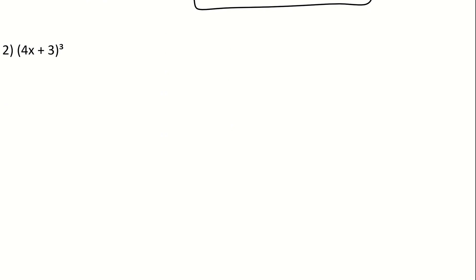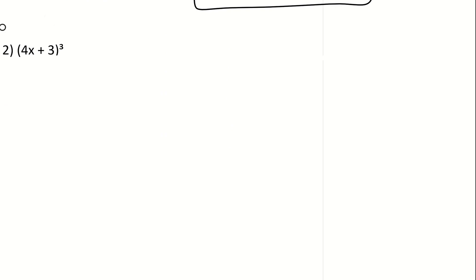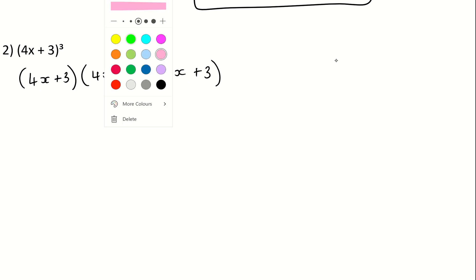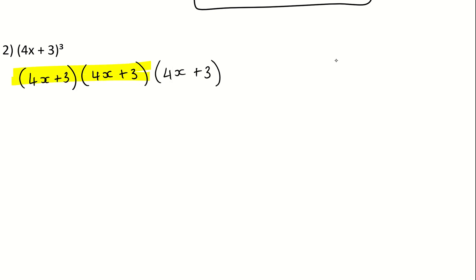The next question gives you one bracket with a cube at the top. This means that this bracket is multiplied by itself and there are three of them: 4x plus 3, times 4x plus 3, times 4x plus 3. So what do I do? I always start by multiplying the first two brackets by each other, so I create the box.